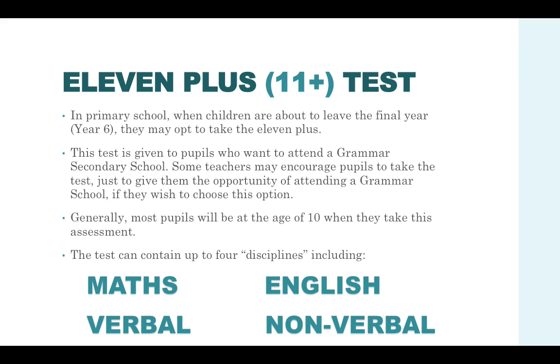In primary school, when children are about to leave their final year, which is year 6, they may opt to take the 11 plus. This test is given to pupils who want to attend a grammar secondary school. Some teachers may encourage pupils to take the test just to give them the opportunity of attending a grammar school if they wish to choose this option.